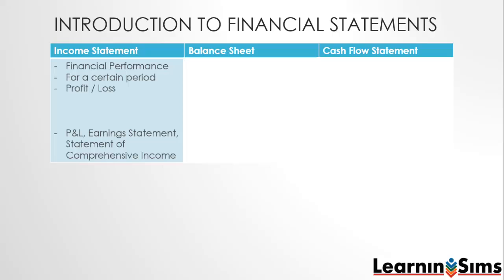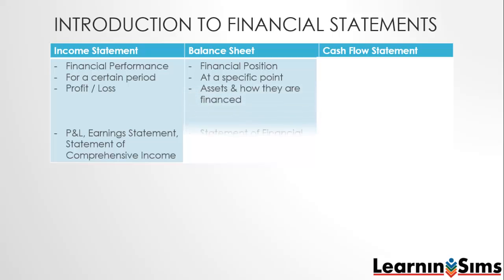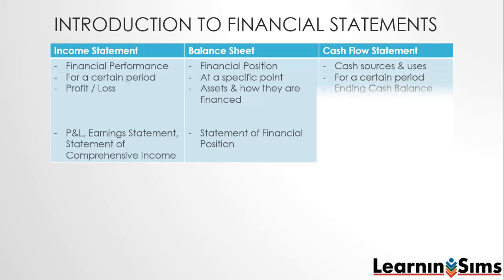The balance sheet shows the financial position of an organization as at a specific date, so it gives a snapshot view, while the income statement gives a longer period view. The result of a balance sheet is that it shows you all the organization's assets and how they are financed. Sometimes it is called the statement of financial position. And then there's the cash flow statement, which shows us all the sources of cash and how that cash was used over a certain period. Its output is the ending cash balance of the organization.